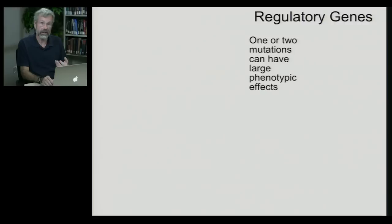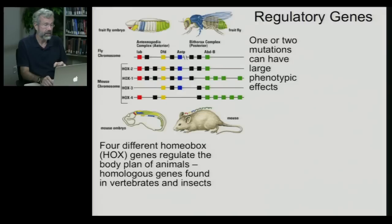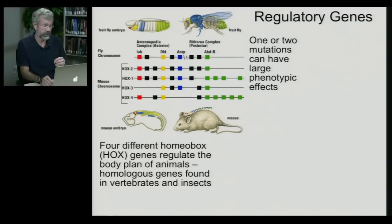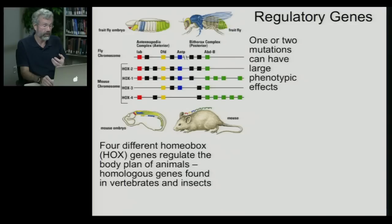Let's look at some of these genes that have such a big impact on early development. These are generally referred to as regulatory genes, and they're important to us here because just one or two mutations can have such very large phenotypic effects. What I'd like to focus on are what are called homeobox genes, often referred to just as Hox genes. There are four different homeobox genes that regulate the body plans of all animals.